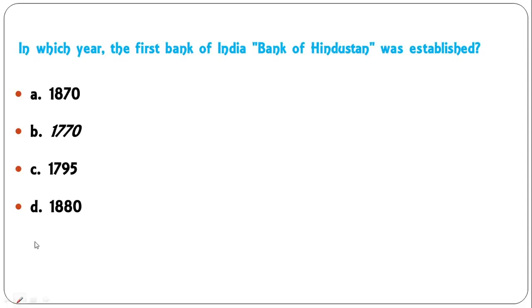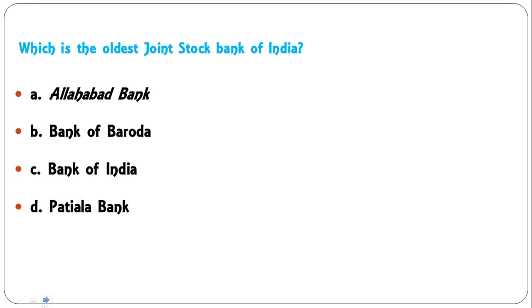In which year was the first Bank of India, that is Bank of Hindustan, established — 1870, 1770, 1795, or 1880? It was established in 1770. Next question: which is the oldest joint stock bank of India? Options are Allahabad Bank, Bank of Baroda, Bank of India, or Patiala Bank. The correct answer is Allahabad Bank.